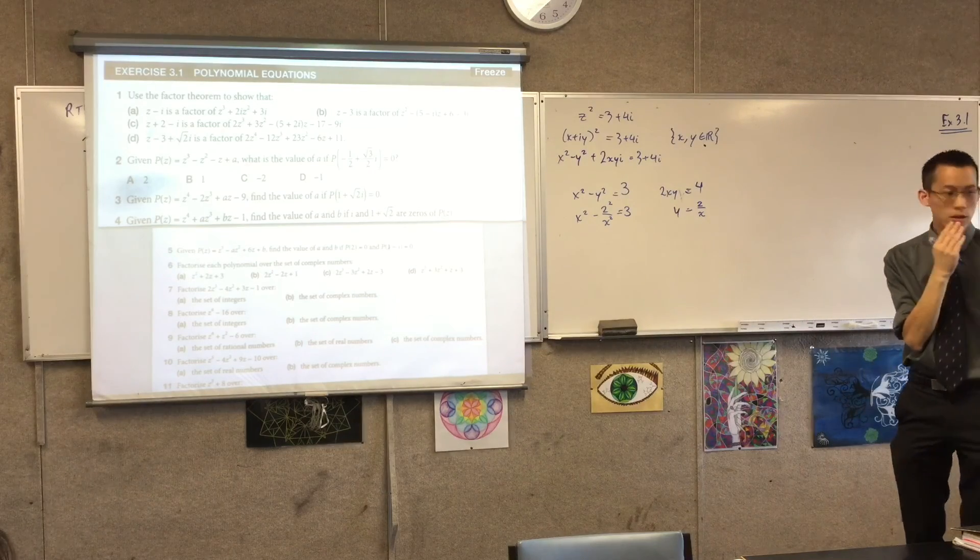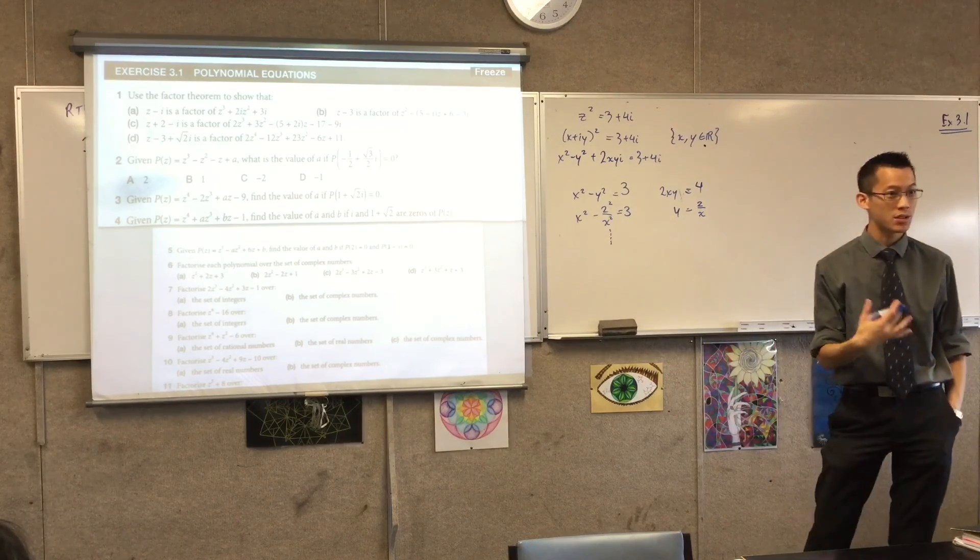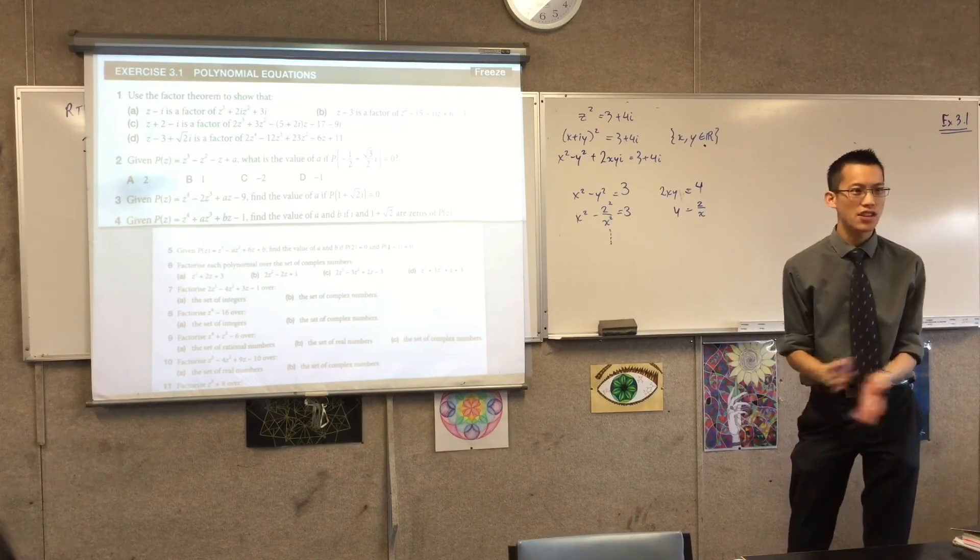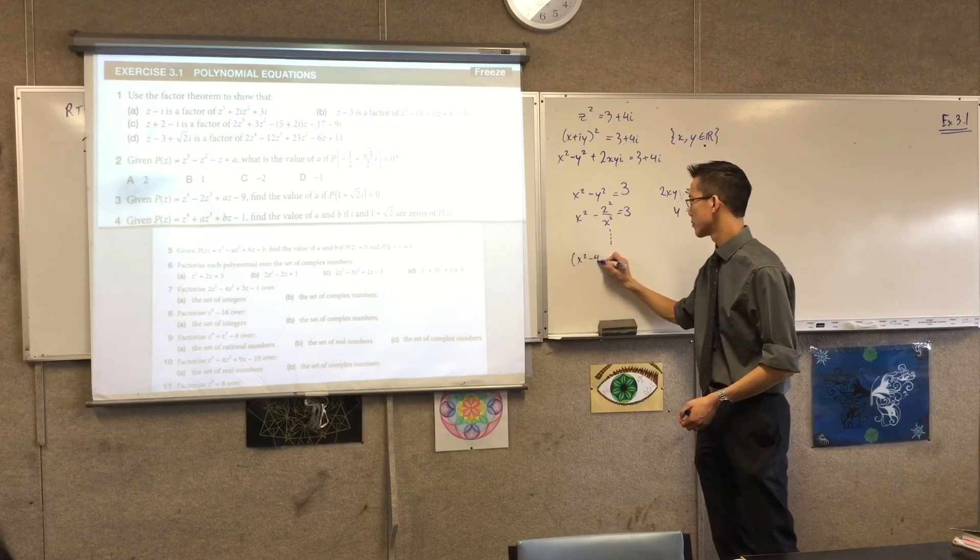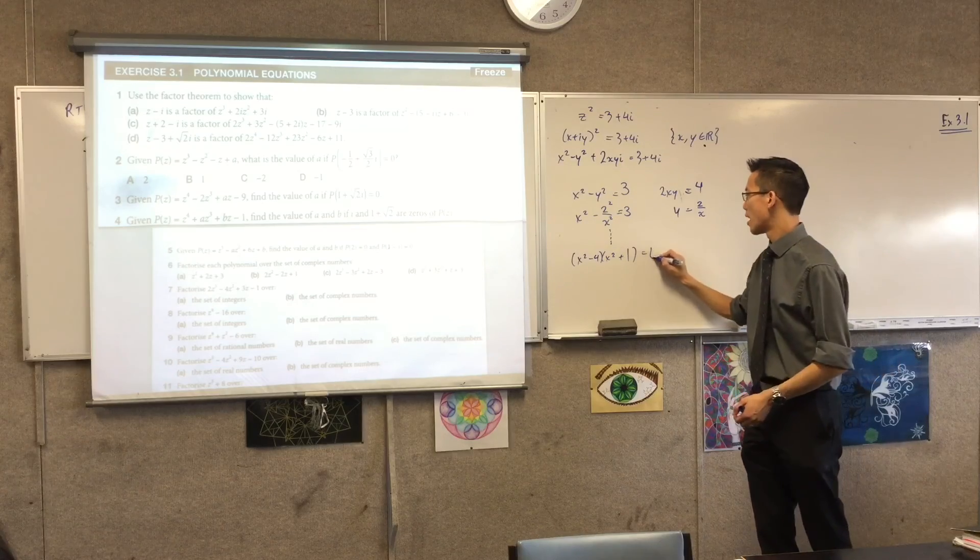We're going to do this. Multiply by x squared. I'm going to multiply through by x squared. That gives me a quartic. Okay? Once you get through to your quartic, you go ahead and solve. What's the factorization you get? x squared minus 4, x squared plus 1. Plus 1.